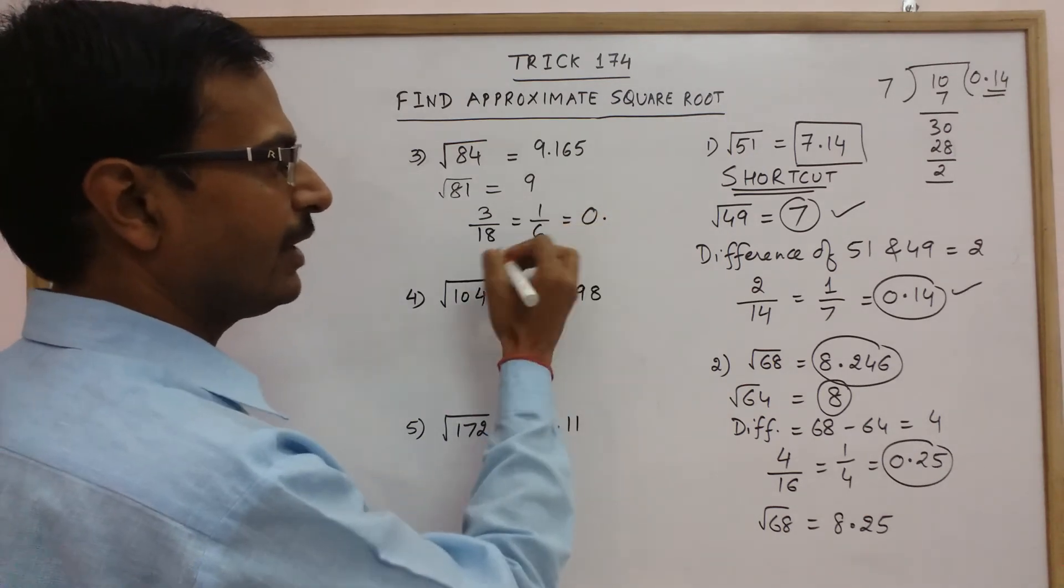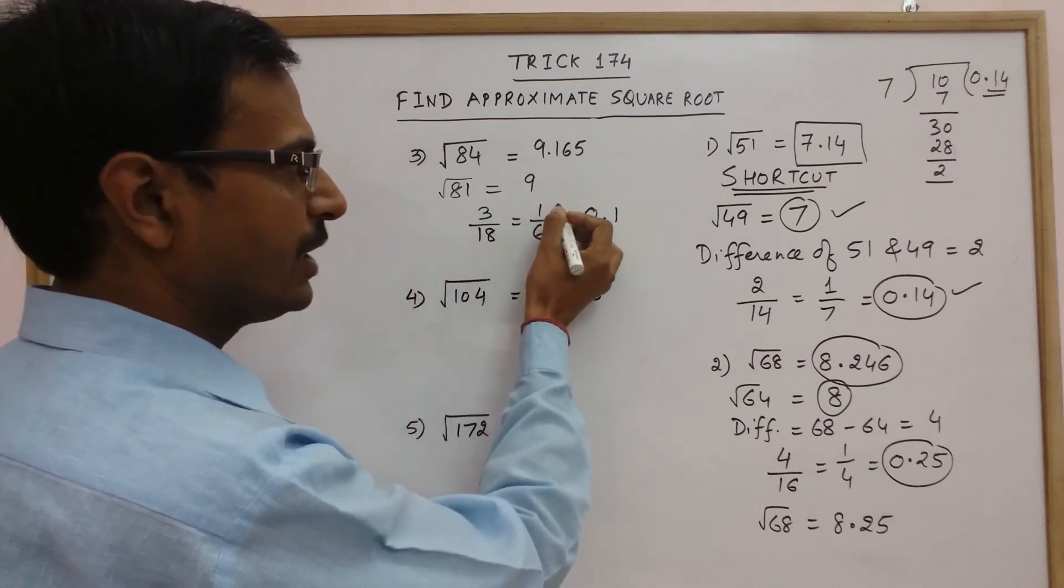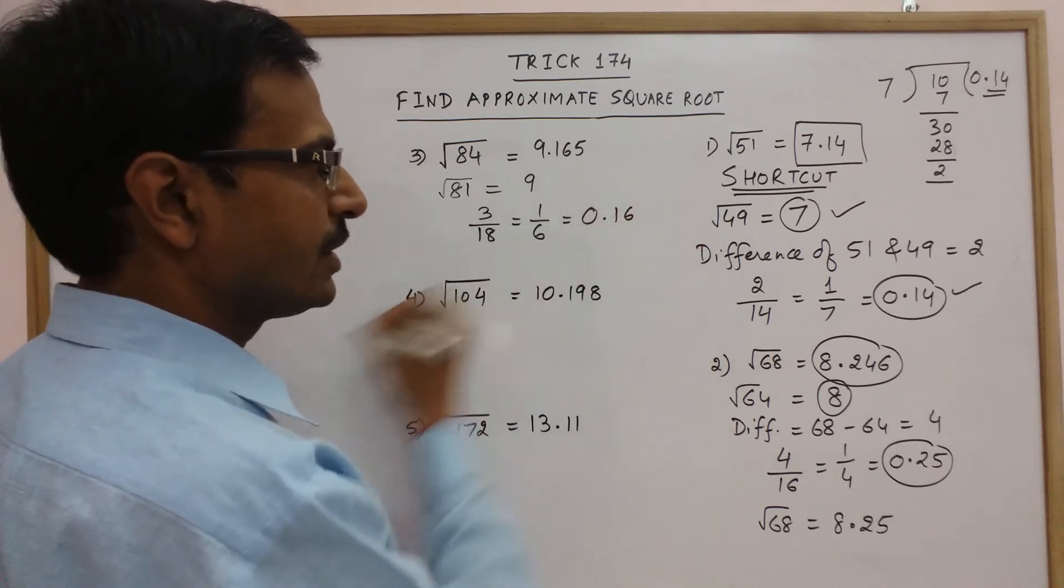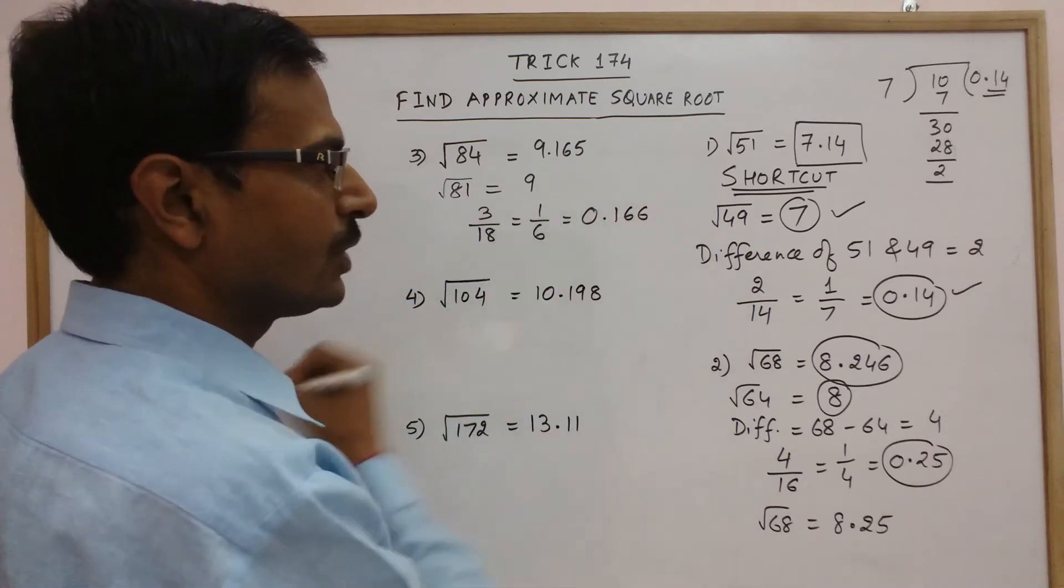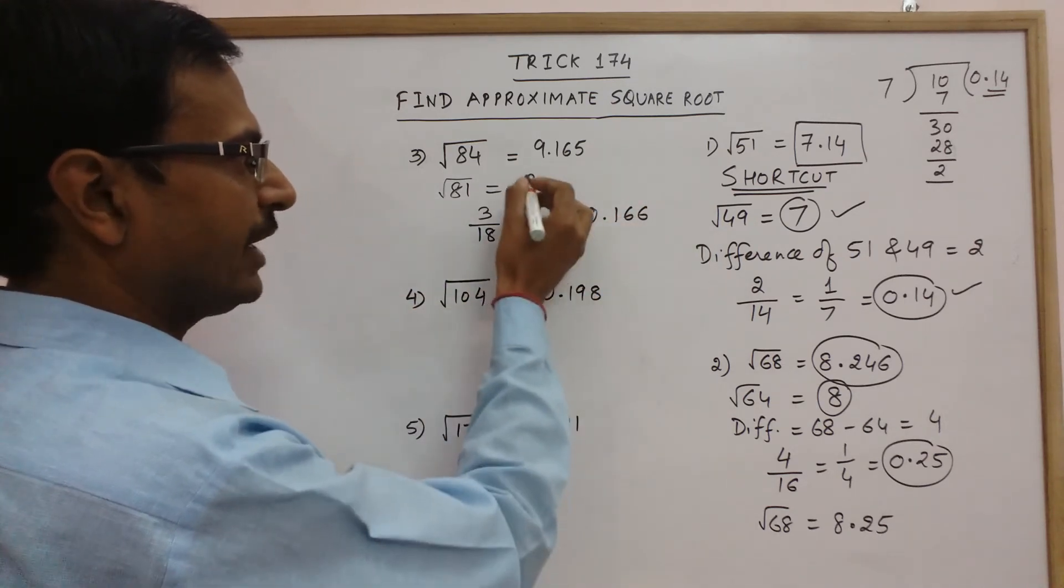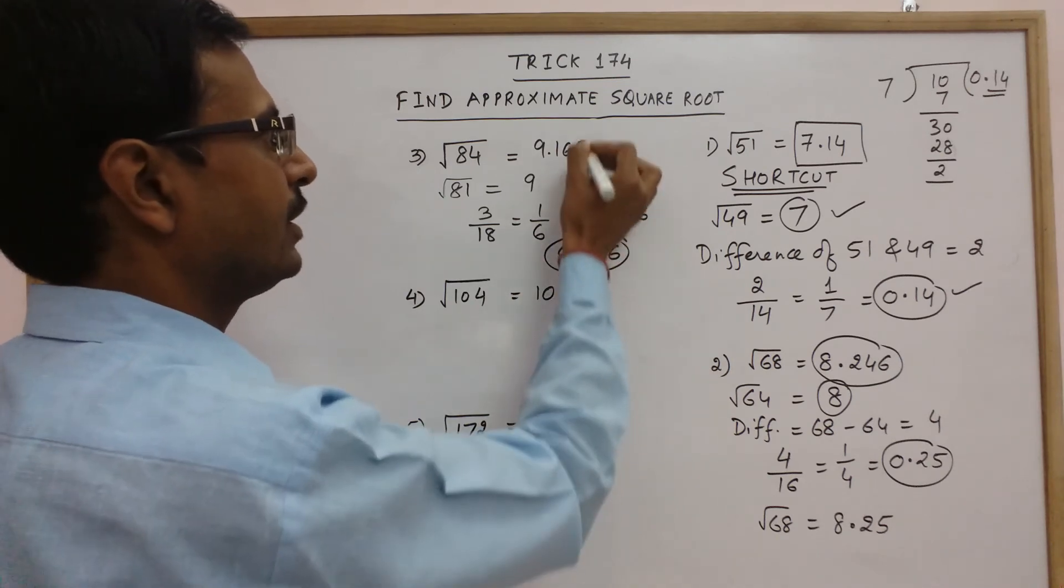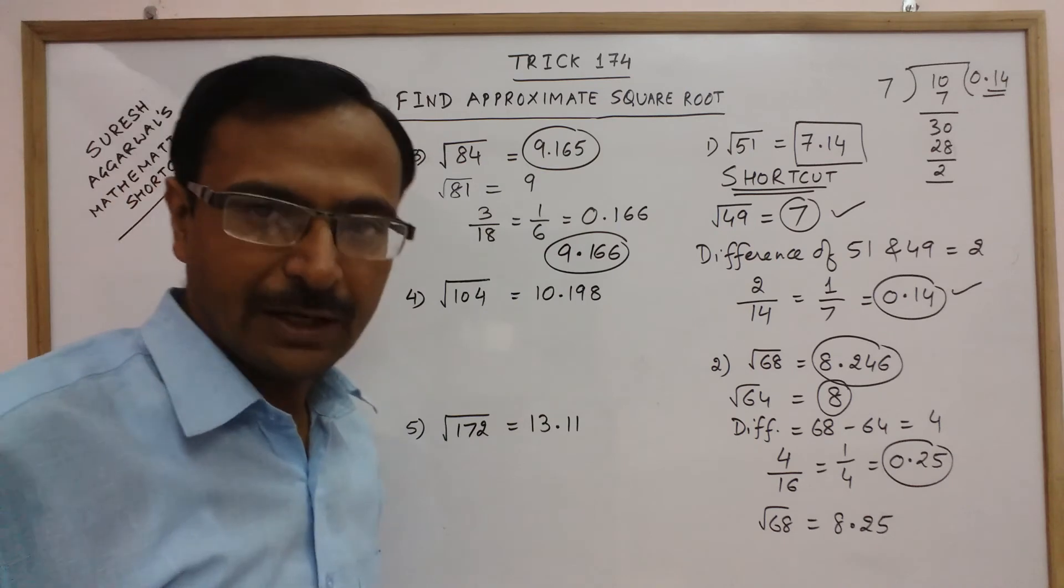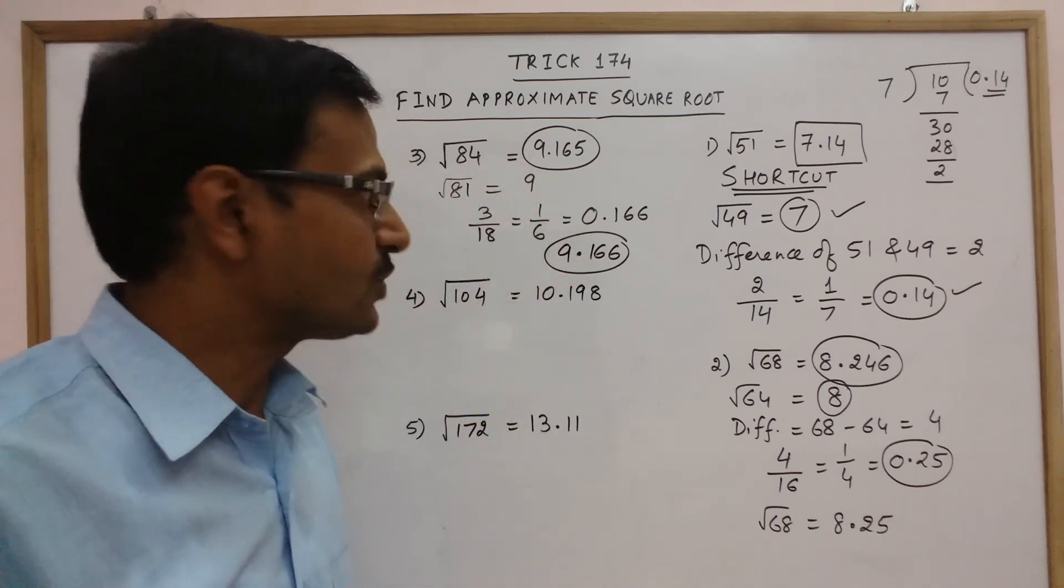So if you divide 1 by 6 you get 0 point. So 10 divided by 6. So you get 1. You are left with 40. So 6 6 up 36. And again 40. So again 6. So the final answer you get is 9.166 which is the approximate value. Very close. Just a difference of 0.001 which is very negligible.